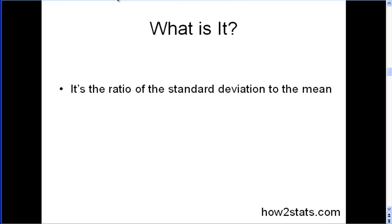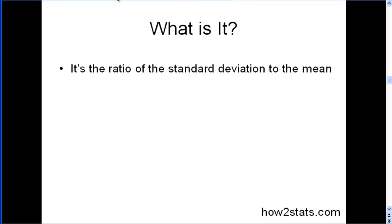So what is it? It's the ratio of the standard deviation to the mean. And this is the formula. So you have the standard deviation divided by the mean. And in most cases, people multiply that coefficient by 100 to get a percentage.